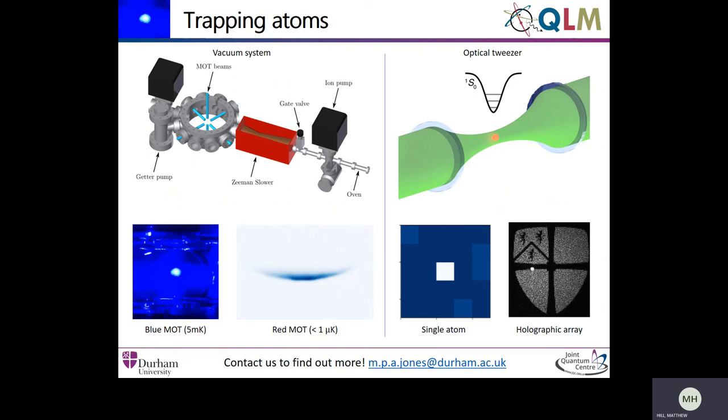Once it's in the centre of the vacuum chamber, six orthogonal laser beams and a magnetic field gradient are used to form a MOT or magneto-optical trap. This traps and cools the atoms down to about 5 millikelvin.